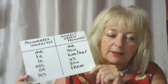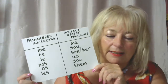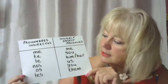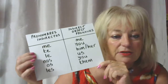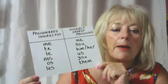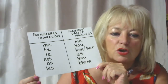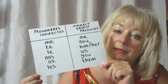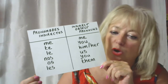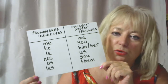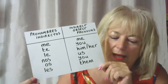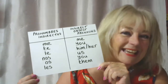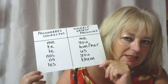Let's see what they are in English. Vamos a mirarlos en español y inglés. Los pronombres indirectos en español son: me, te, le, nos, os, les. Y en inglés son: me, you, him, her, us, you, them. Those are the indirect object pronouns.